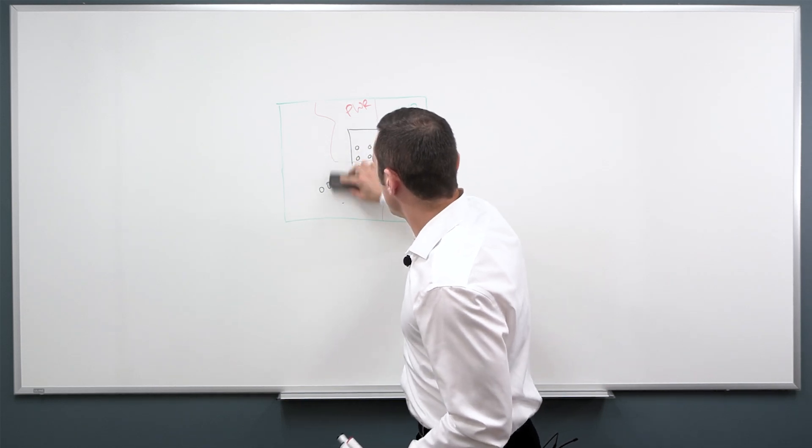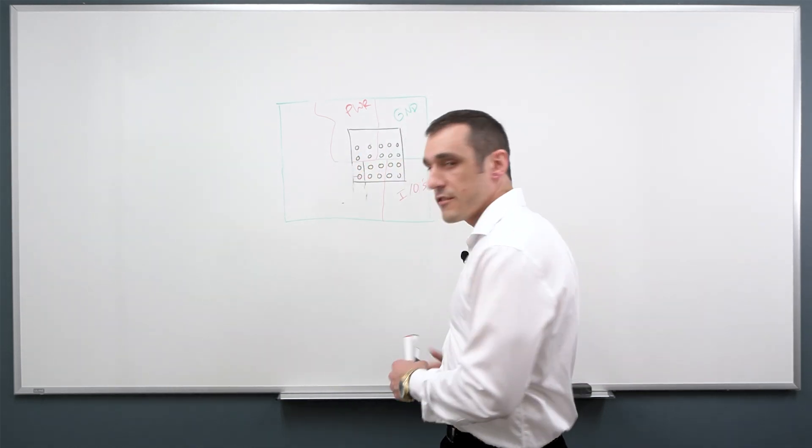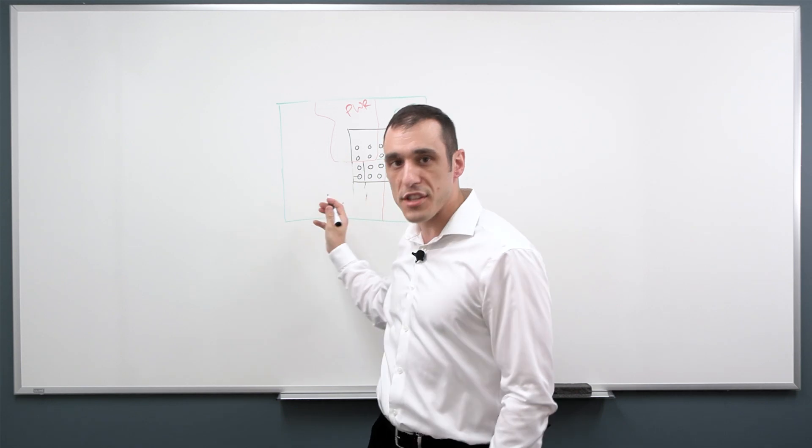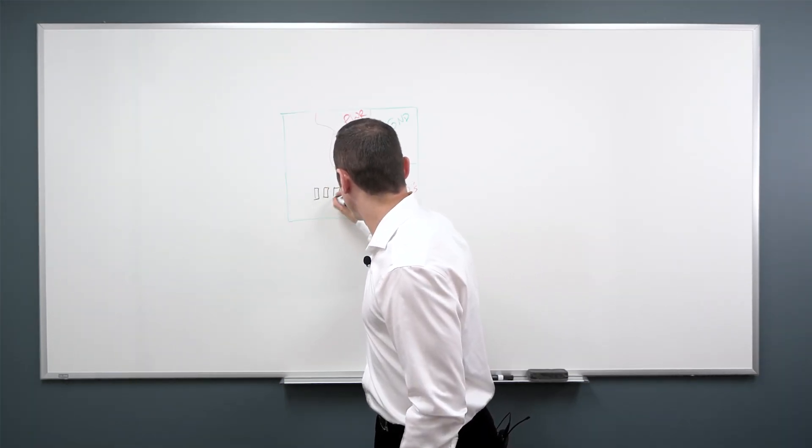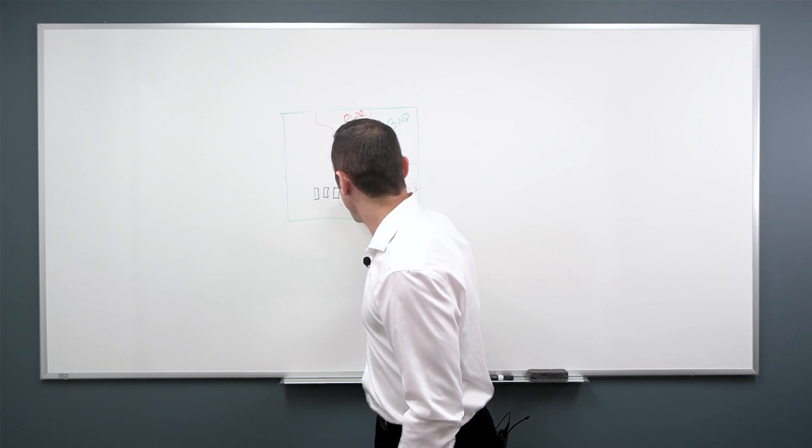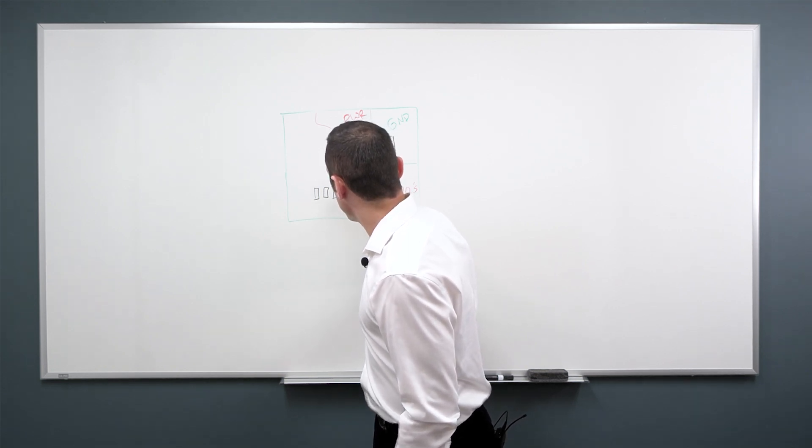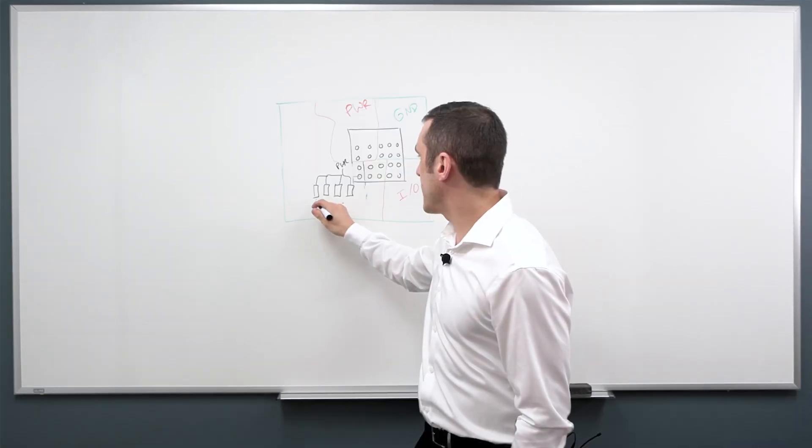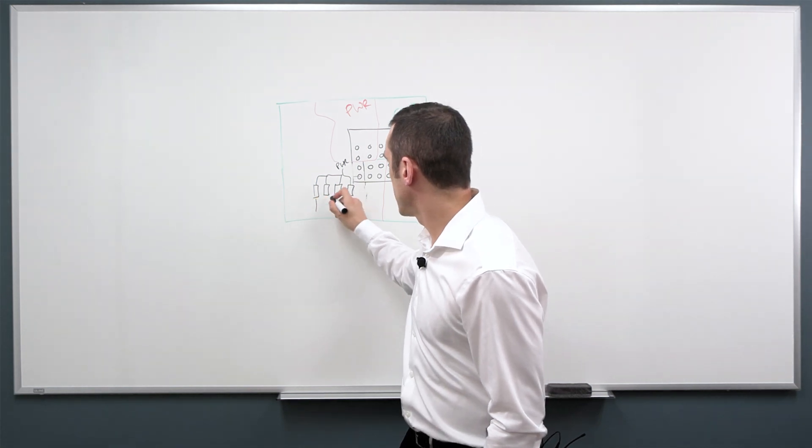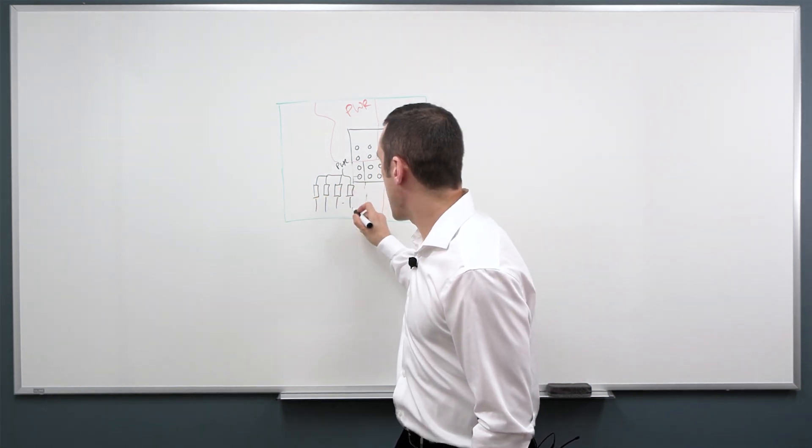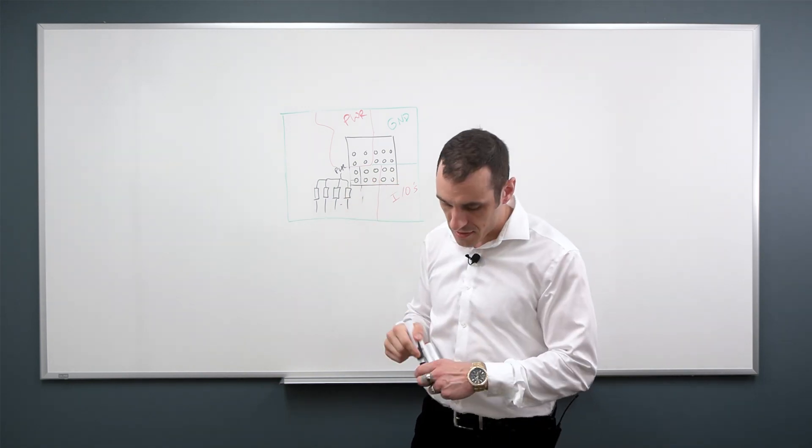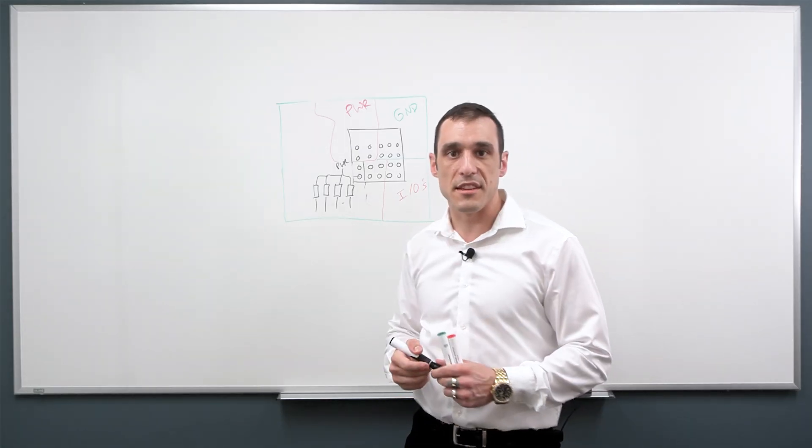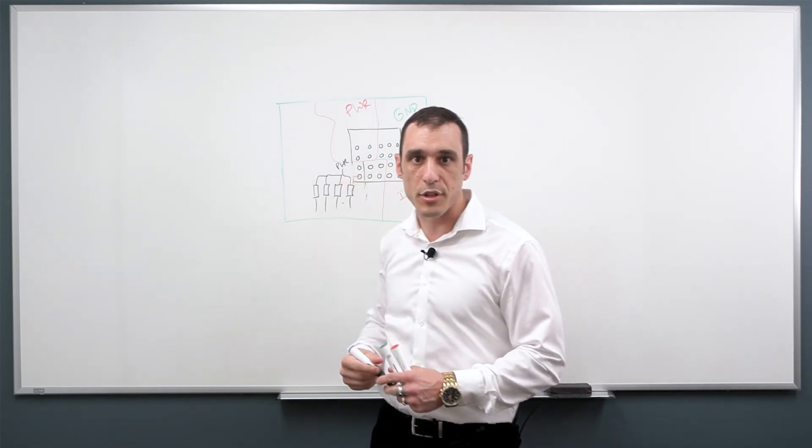Sometimes what you'll do is you'll have like a whole bank of resistors that are just used for configuration. So I might have these lined up over here and they can all be connected back to my power and they can all be connected back to ground. And then I have a connection coming off and going to my different pins. And so just by DNPing these different resistors, I can then change the configuration on this component.